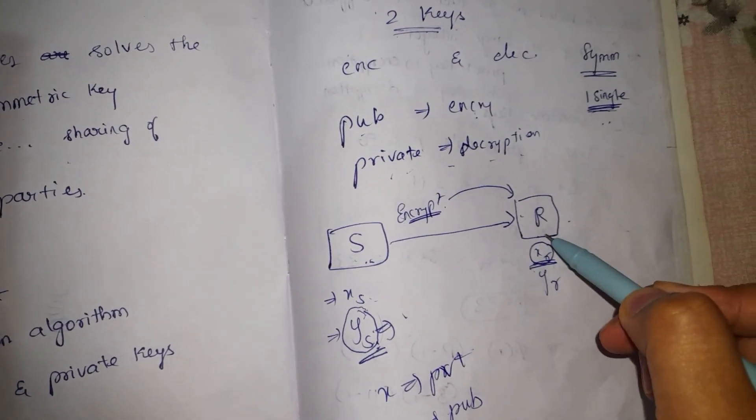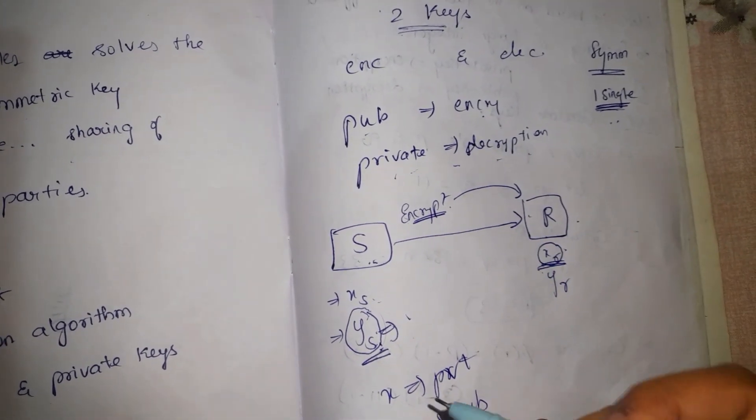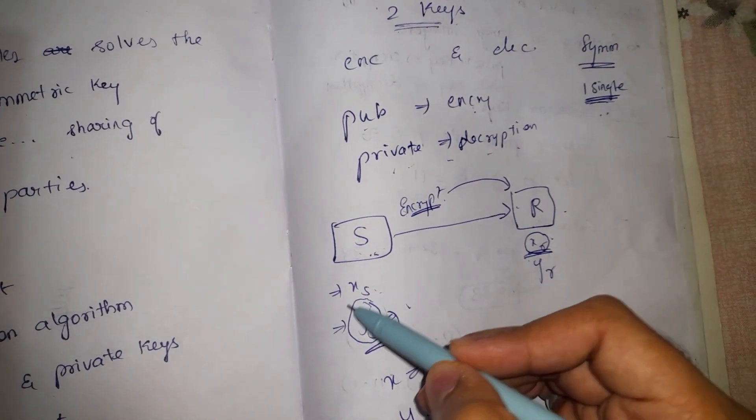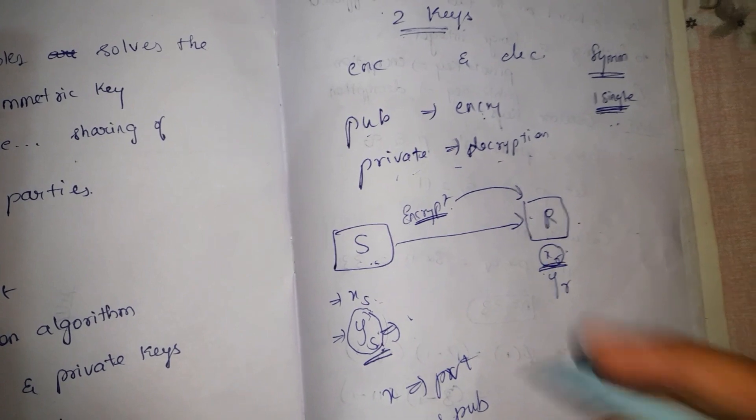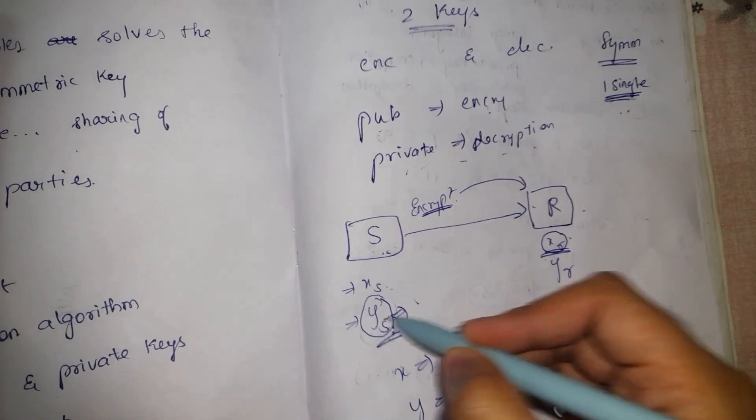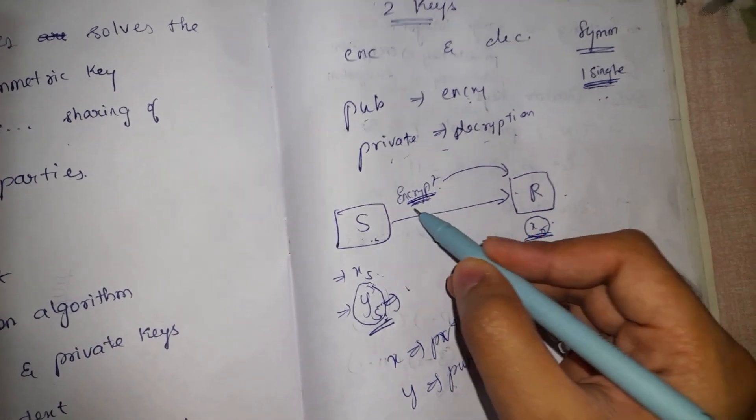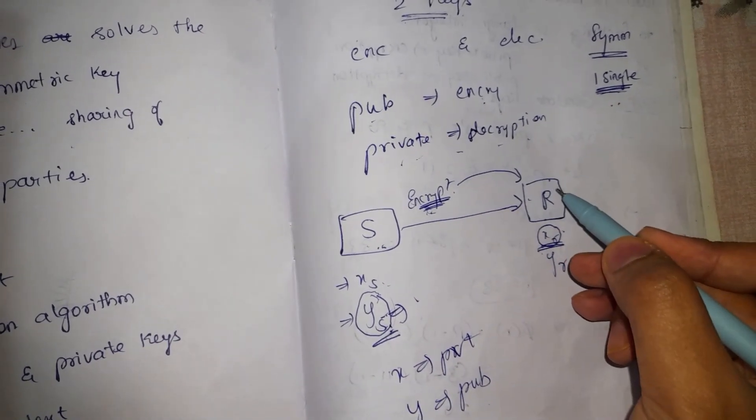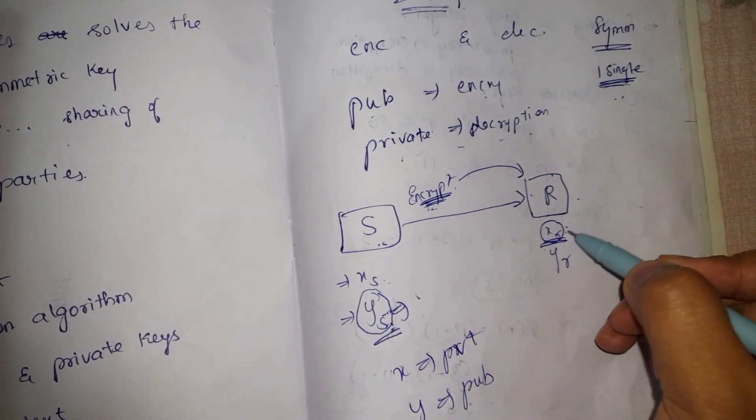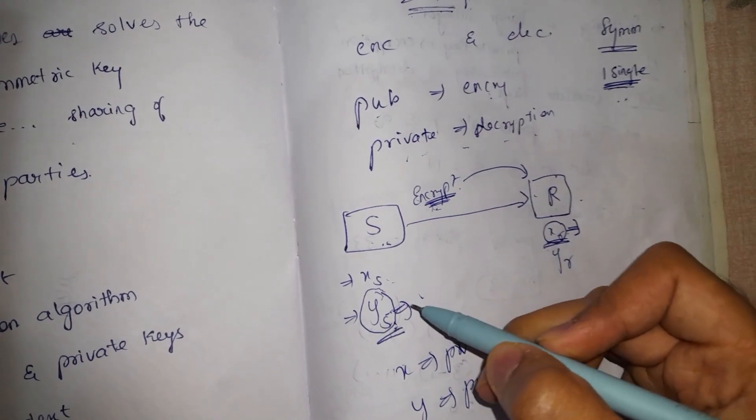When the sender wants to send a message to the receiver, he will use his public key, which will be known by everyone, to encrypt the messages. When the receiver receives this message, he will make use of his own private key as well as public key to decrypt the message.